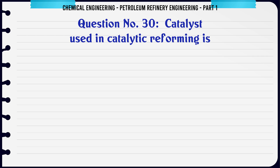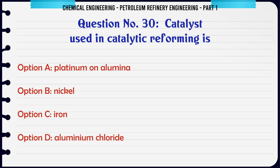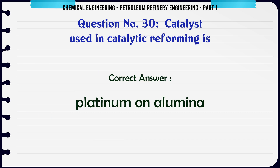Catalyst used in catalytic reforming is: A. Platinum on alumina, B. Iron, C. Aluminium chloride. The correct answer is Platinum on alumina.